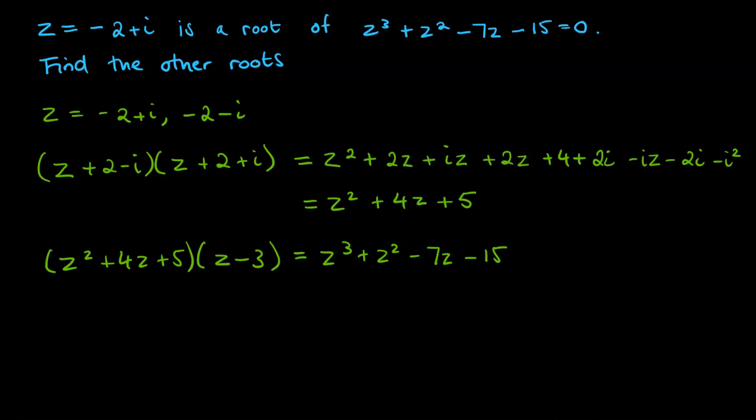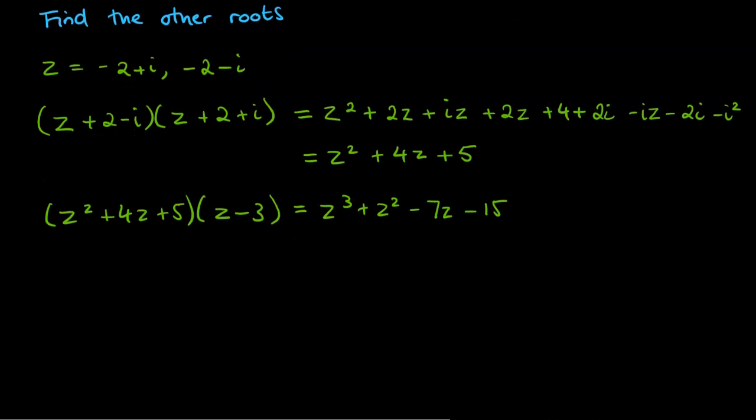So our final factor is z minus 3, which there gives us our final roots. So now the roots are that we have z is minus 2 plus i, z is minus 2 minus i. And our final root from that factor, we just found z can be 3.